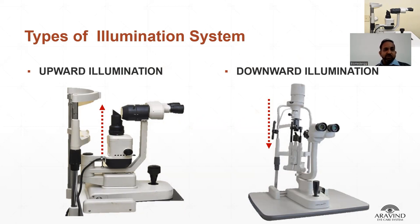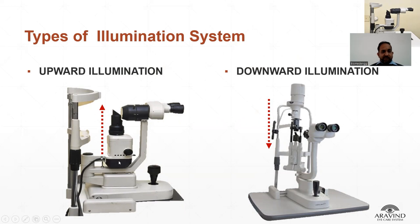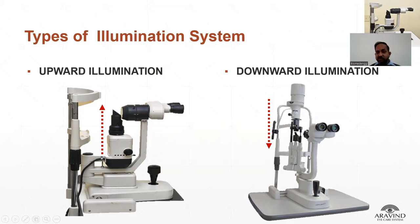The slit lamp is defined by two types of illumination system. The first one is the upward illumination system and the second one is the downward illumination system. In the upward illumination system, the bulb or light source is placed at the bottom of the slit lamp in the lamp house. In the downward illumination system, the bulb or light source is at the top of the slit lamp. The upward illumination system uses a right-angle prism to direct light into the patient's eye, and the downward illumination system uses a mirror kept at a 45-degree angle to direct light into the patient's eye.